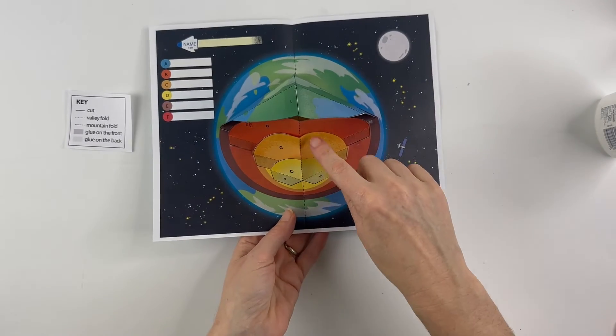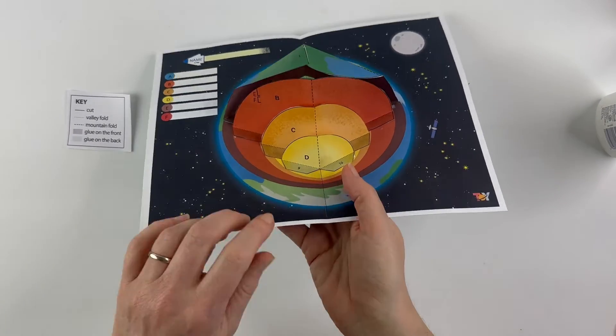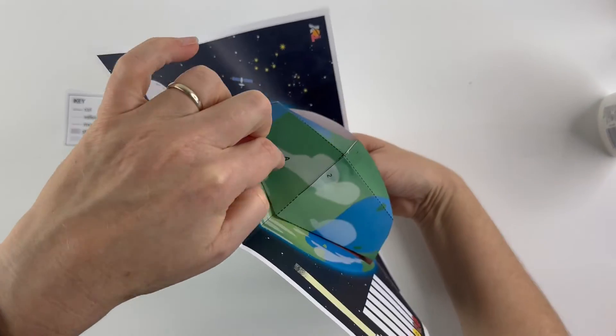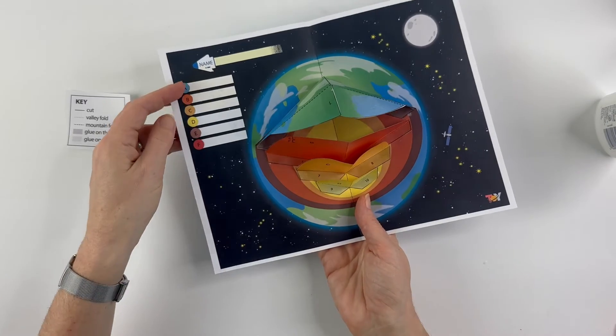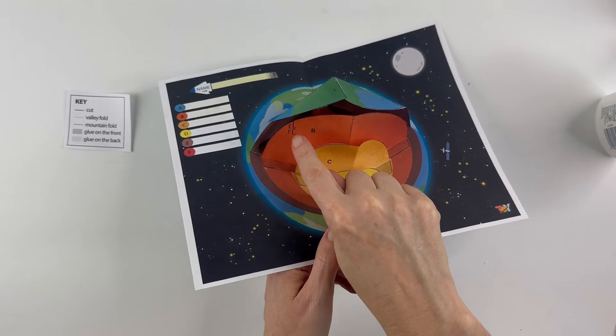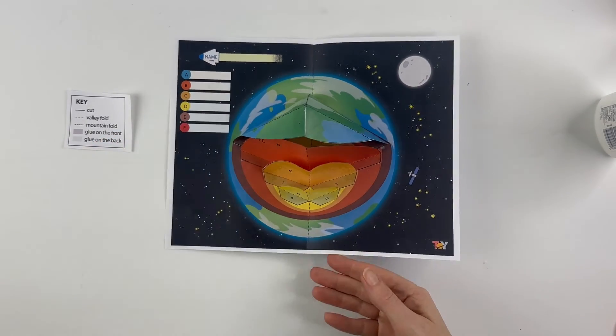And then you can label the different layers of the earth. So there's A, you can probably see on here D, C, B, and then A is labeled on the inside and then also right there. And so you label those there. And then F and then E, this line is supposed to rise up to the crust. And you can label those there.